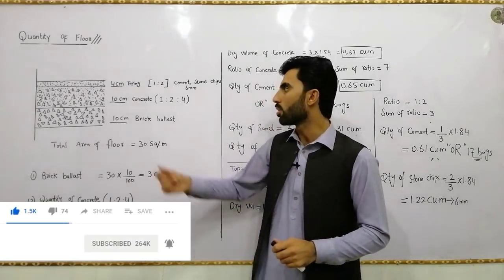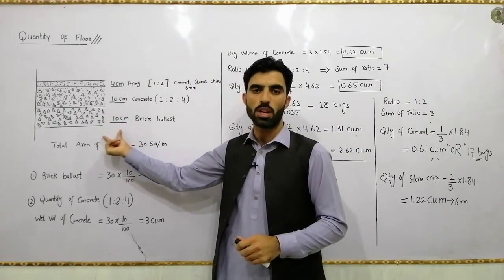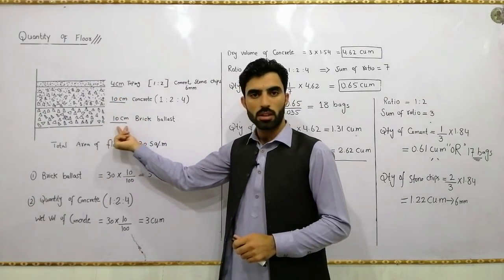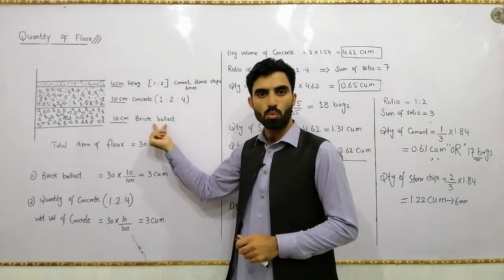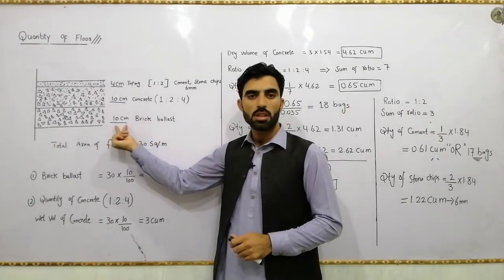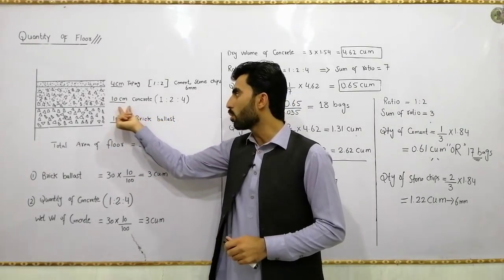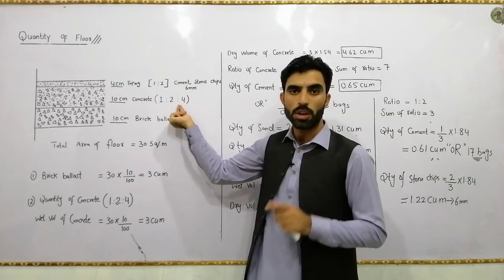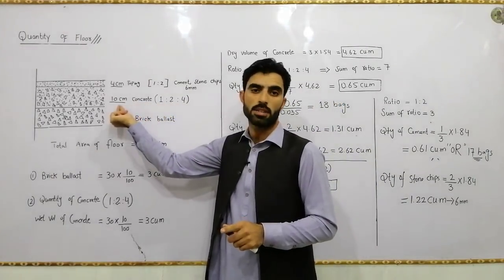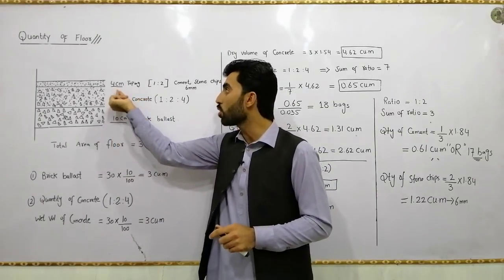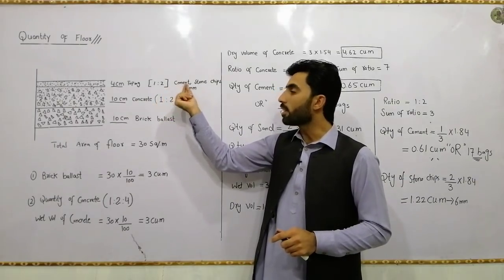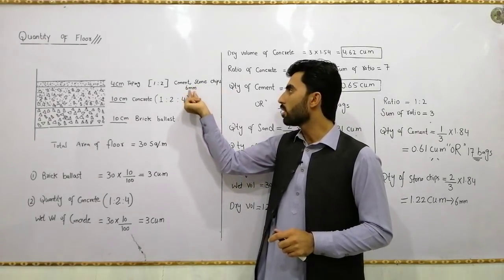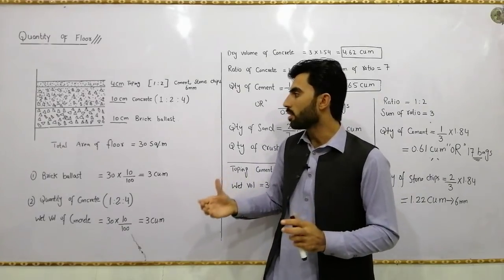Let's start with quantity of floor. Remember, we have three layers. The first one, from the bottom, is a 10-centimeter brick blast layer. The second one is 10-centimeter concrete with a 1:2:4 mix ratio, M20 grade concrete. The last one is a 4-centimeter topping with a 1:2 ratio, done with cement and stone chips of 6-millimeter size.